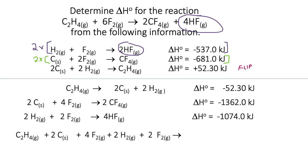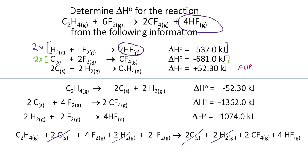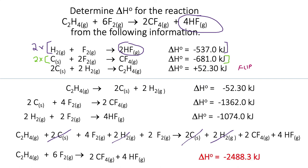Now let's add our reactions up and verify we have the correct overall reaction. Adding reactants and products, we can cancel the carbons and hydrogens. We also have 4F2 plus 2F2, which gives 6F2. We can confirm we have the same target reaction, so we add up all the enthalpies and get a total enthalpy of reaction of negative 2,488.3 kilojoules.